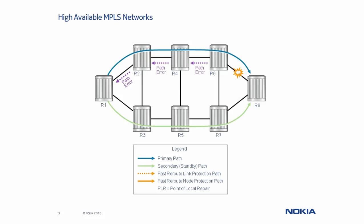A better solution would be for the router that detects the failure to locally solve the problem by using an alternative path to forward packets all the way to the tailend — that is, to use a detour that avoids the point of failure. And that is the goal of Fast Reroute. It is a faster solution because there is no need to wait for the headend to be informed in order to solve the problem. Instead, the router that detects the failure becomes a point of local repair, or PLR. The headend is still informed of the failure, but in the meantime, the traffic flow is not interrupted.